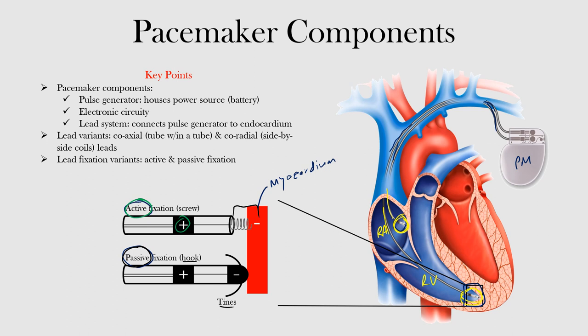Disruption of the conductor elements can result in high impedance, such as from a fracture, while disruption of insulation materials can result in low impedance due to short circuiting, such as from an insulation breach.